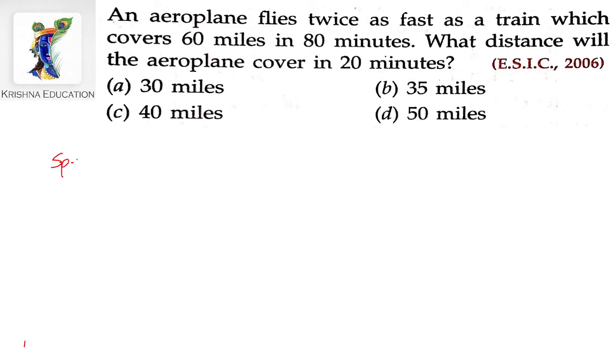So what is the speed of train? It is equals to 60 divided by 80 miles per minute. Now the speed of aeroplane S2 would be twice the speed of train, that is 2 times 60 divided by 80 miles per minute.